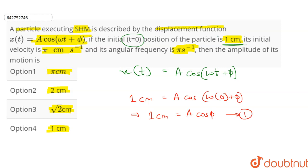It is also given that at initial position, angular frequency is π and velocity is π cm/s.